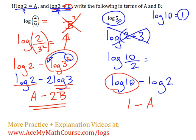We don't have a B here. We just have 1 minus A, but that's all we can really do. 1 minus A is equal to log of 5, and that's it.